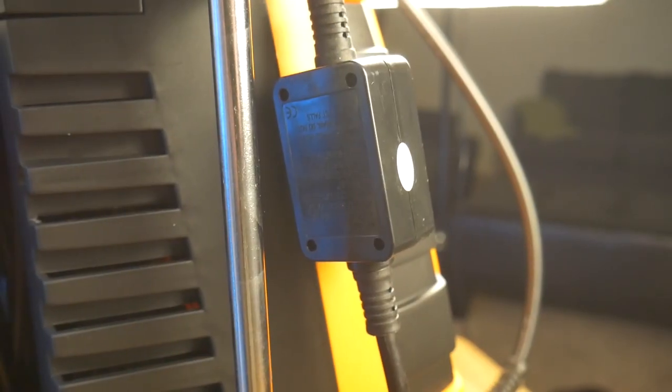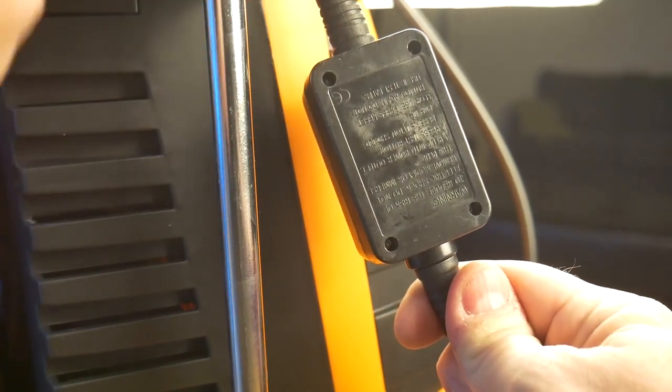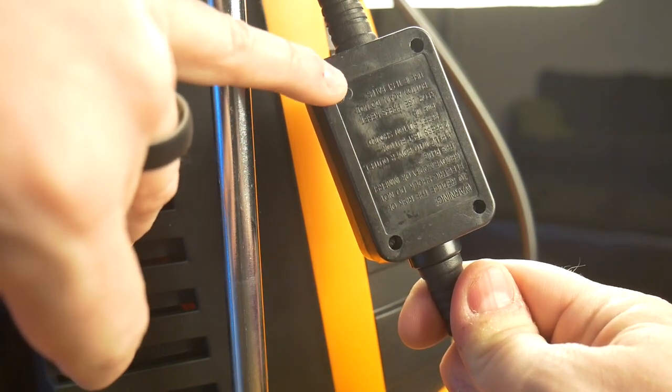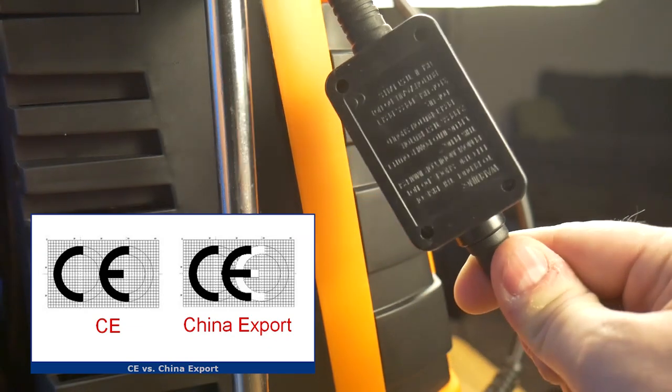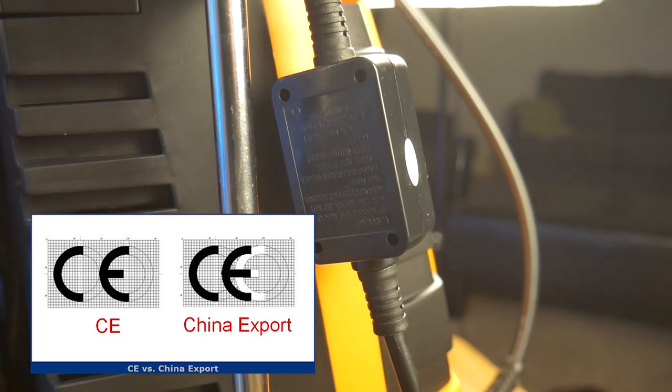The pressure washer doesn't come with any UL or CE certifications. And don't let that CE mark on the GFCI fool you. That is actually the China export mark that suspiciously looks a little too similar to the European conformity symbol.